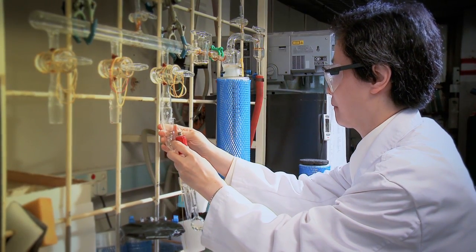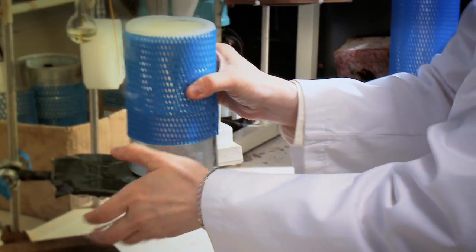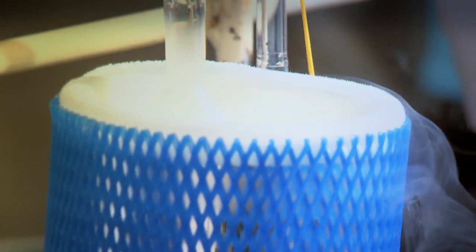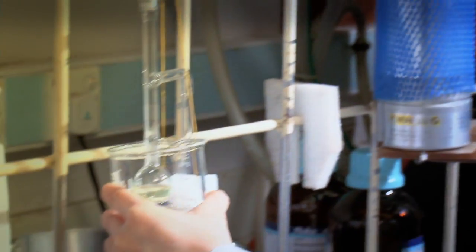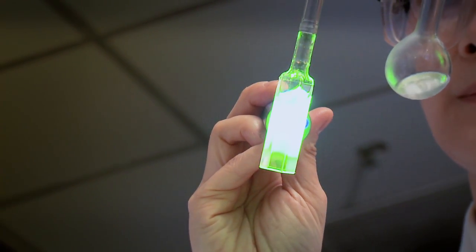So what I'm doing here is I make solutions of my metal complex. Dissolved oxygen has to be removed using liquid nitrogen because oxygen usually would quench phosphorescence. This solution which is free of oxygen will be used for measurements of the luminescent properties.